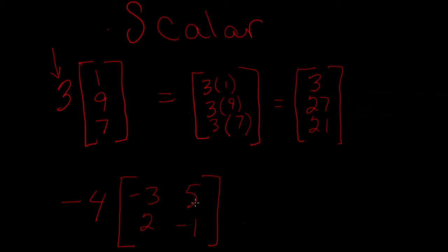Negative four times negative three is positive 12. Negative four times positive two is negative eight. Negative four times five is negative 20. Negative four times negative one is positive four. And this would be your answer.